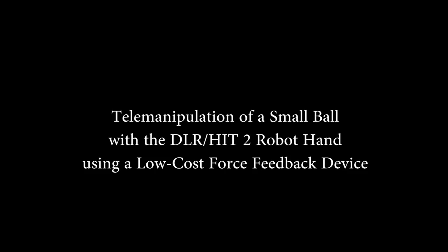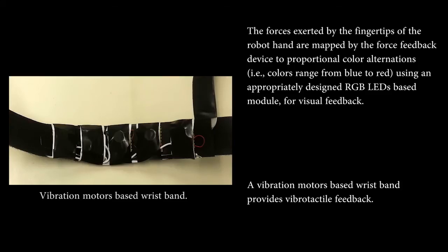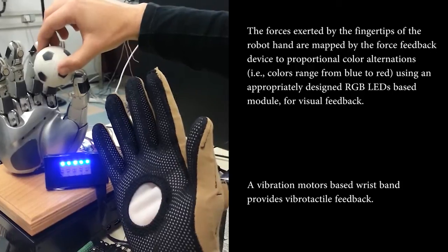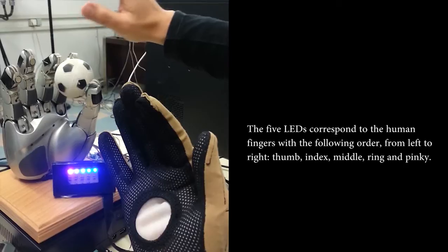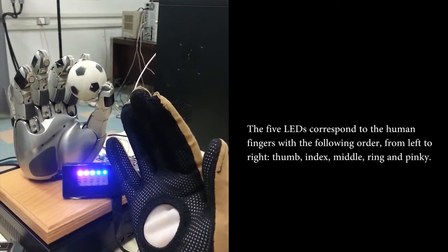In order to manipulate objects with a DLR HIT-2 robot hand teleoperated with a Cyberglove II, we must be able to detect contact with the environment and perceive the forces exerted by the robot fingertips. So we developed a low cost force feedback device based on RGB LEDs and vibration motors.